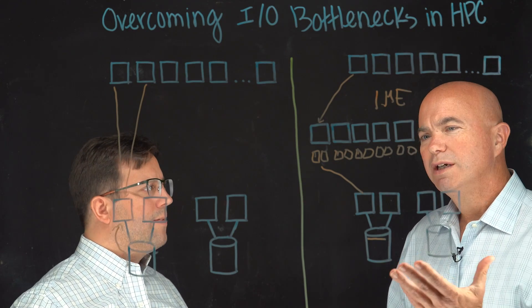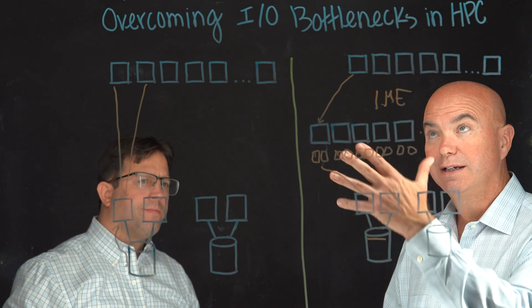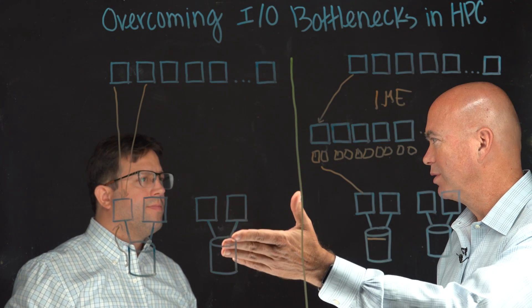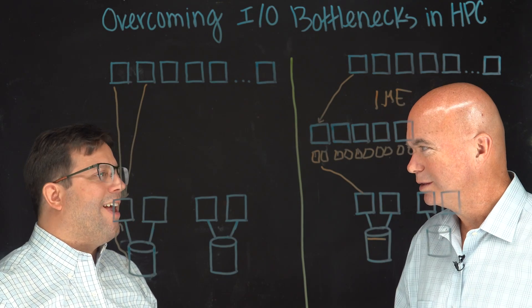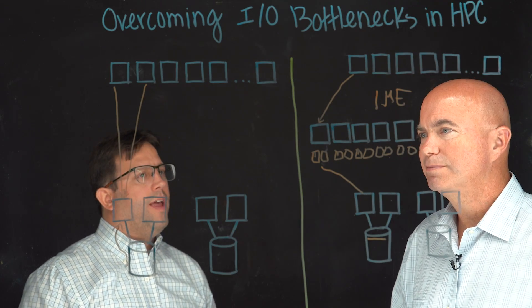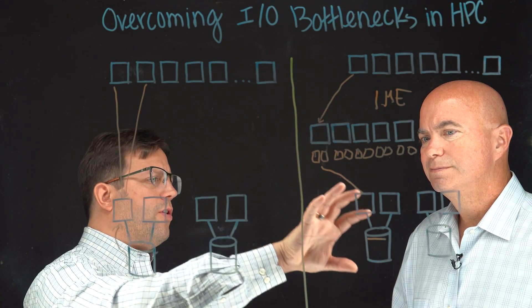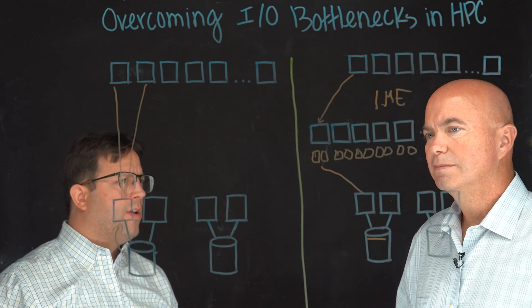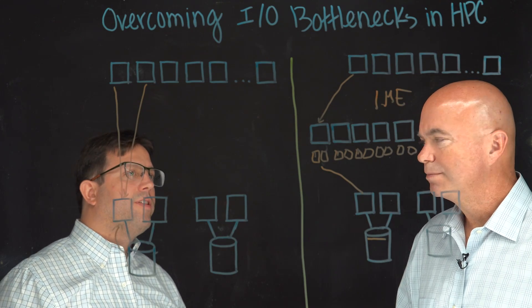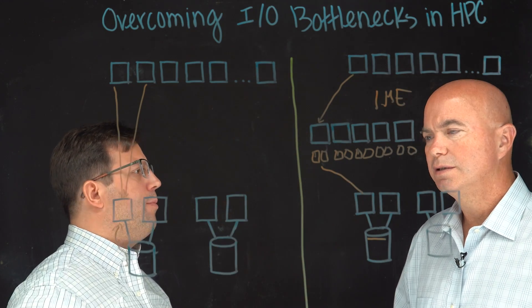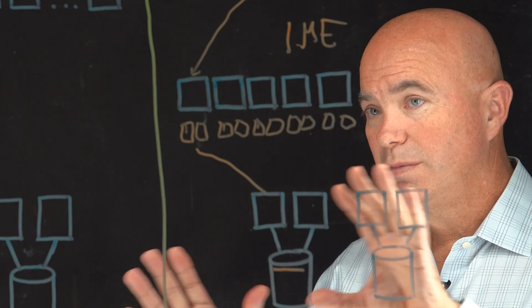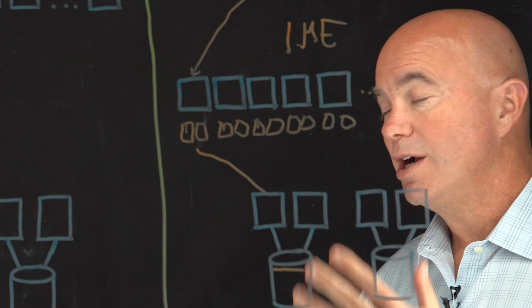Why not just throw NVMe into a traditional file system? You can, and it has significant benefits for some workloads, but it doesn't help with all workloads. By putting it in this IME layer, you can reuse existing infrastructure you've already purchased. NVMe is quite expensive, so you don't want to deploy massive petabytes on that. Using this to extend the lifetime of an existing system is quite interesting. The intelligence DDN is putting into this layer is what makes the difference.